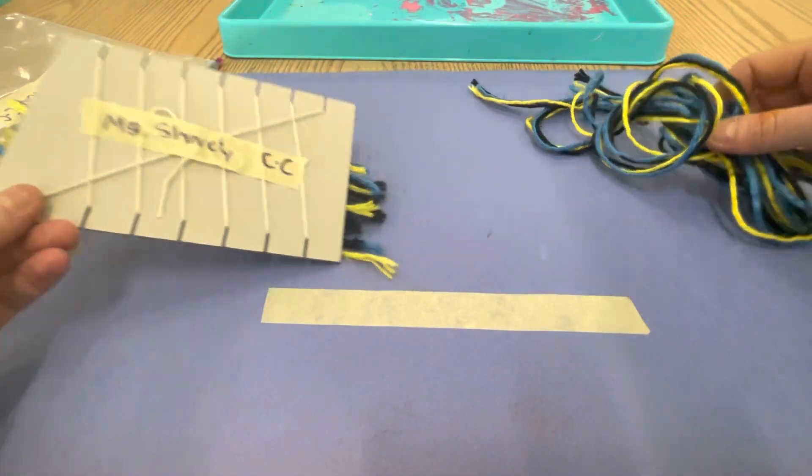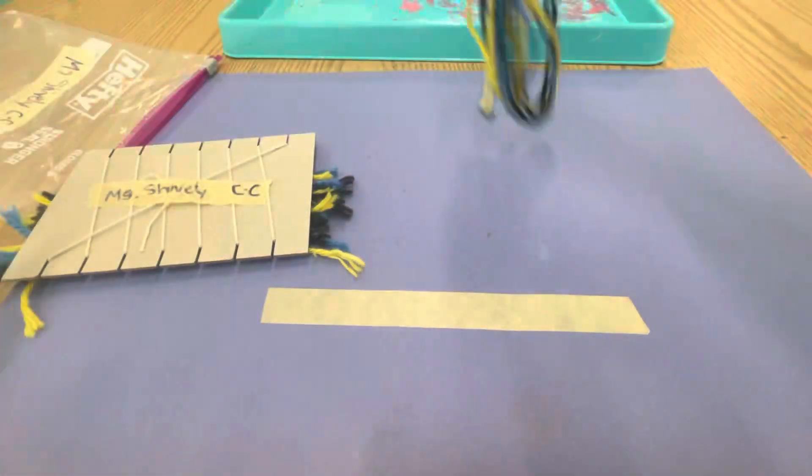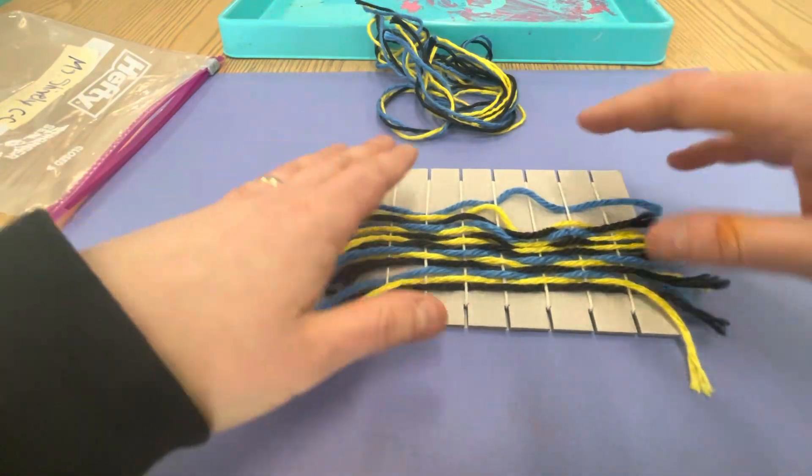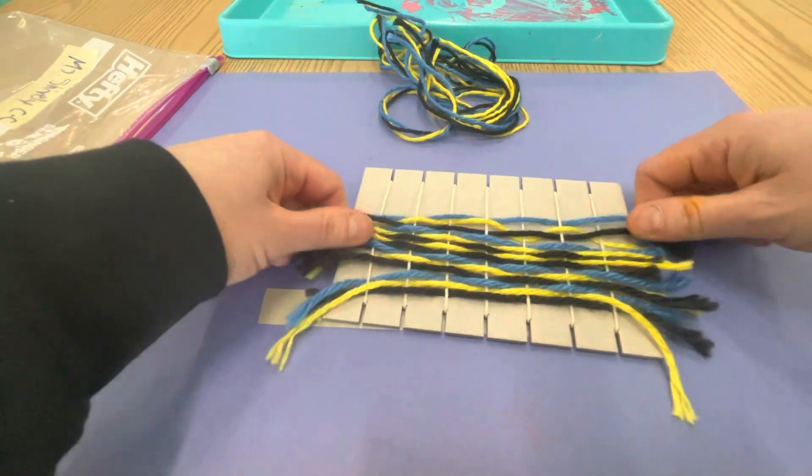There's going to be two of each color for the strings. If I did not get a chance to do this for you, you're going to start off by straightening out your yarn.